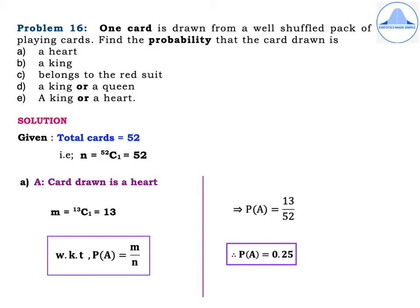First subdivision: define event A as card drawn is a heart. We are selecting only one card. Among the hearts there are 13 cards, and out of these 13 hearts we select only one, so m = 13C1 = 13. Therefore P(A) = m/n = 13/52 = 0.25.